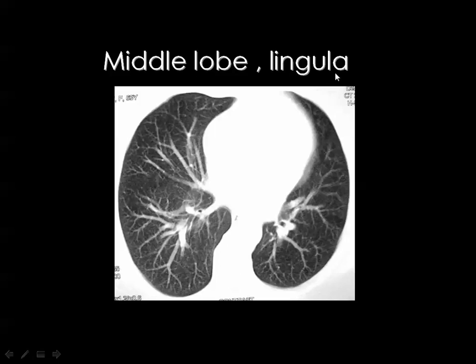Test: in a section through the cardiac shadow, the lingula is anterior on the left and the middle lobe anterior on the right. The basal segments on the right are: anterior, posterior, medial, and lateral. The middle lobe has two segments — medial (closer to the heart) and lateral (away from the heart). The lingula also has two segments — superior (away from the heart) and inferior (closer to the heart).